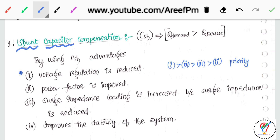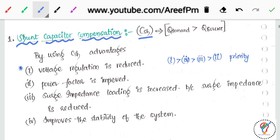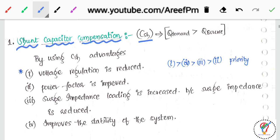We will now focus on shunt capacitor compensation, generated by Csh. Shunt capacitor compensation means wherever the load is, we connect a capacitor across it. With the help of that we can control the reactive power requirement.